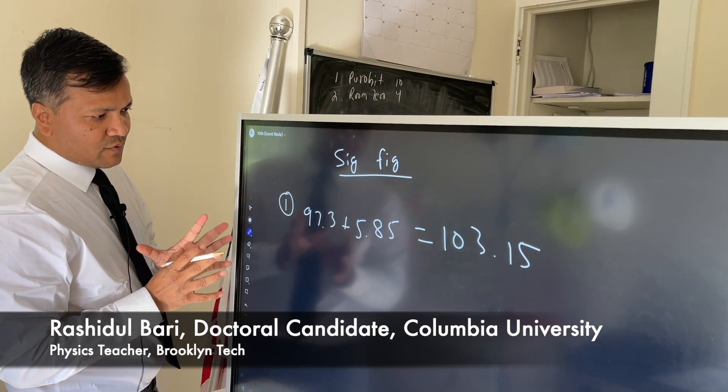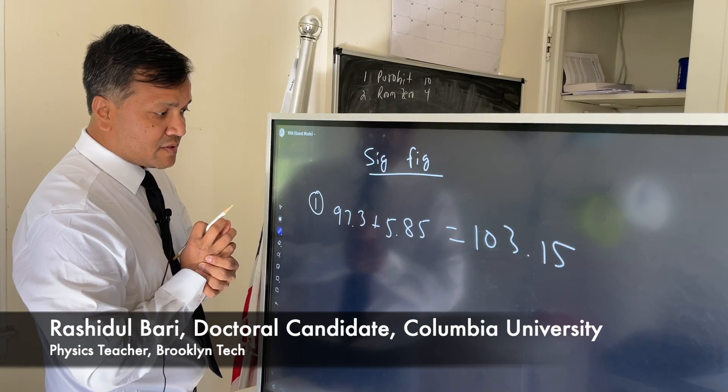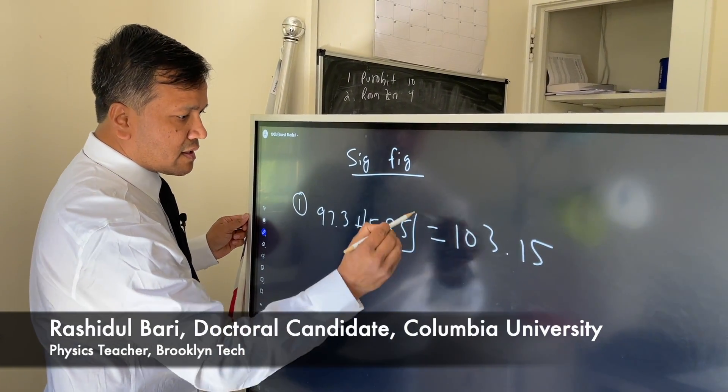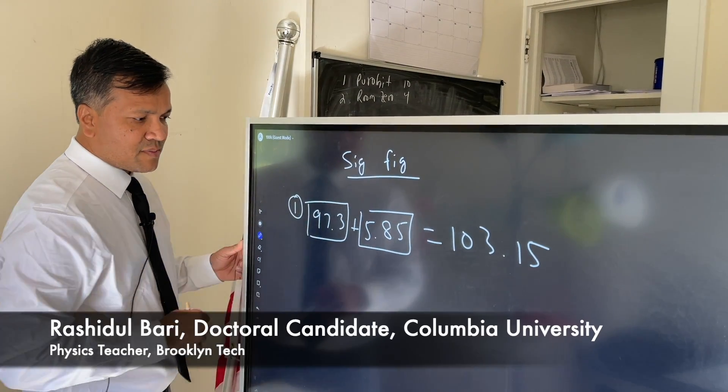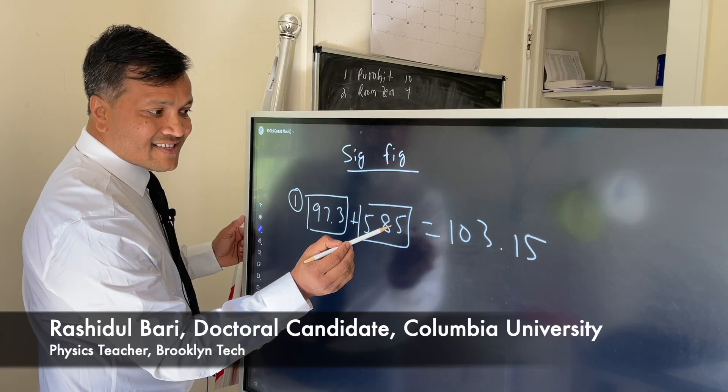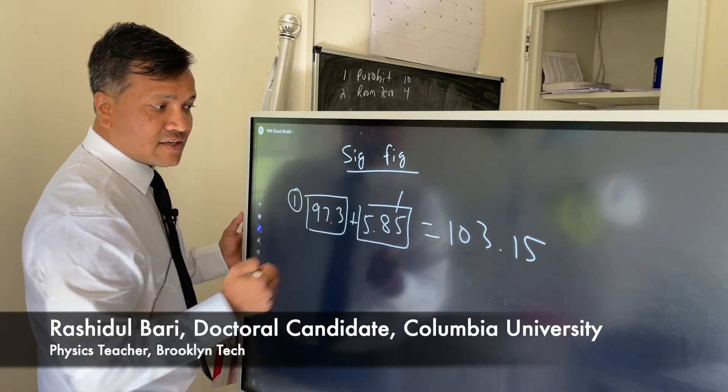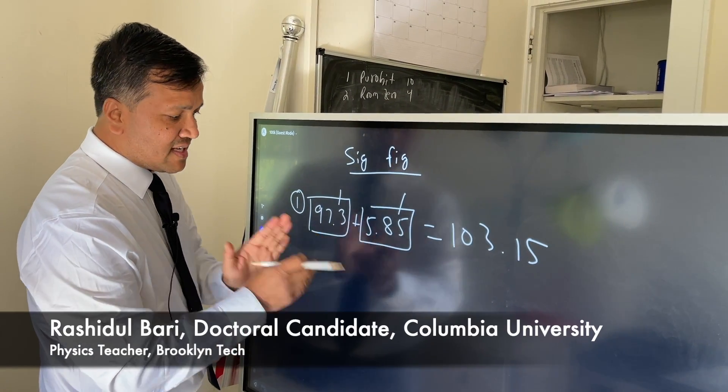We have to follow some rules. Which one has the least precise measurement? This one is the most precise, this one is the least precise. Why? Because this is tenths, however this is hundredths, this is hundredths, this is only tens, and this is hundredths. So this is most precise and this is least precise.